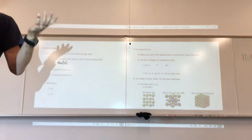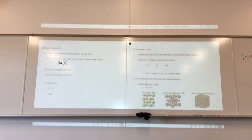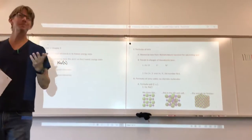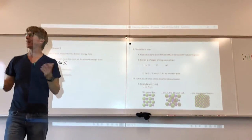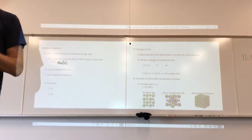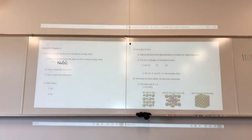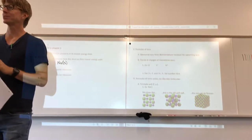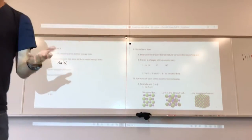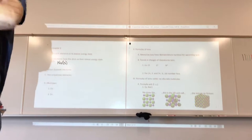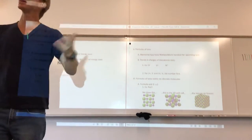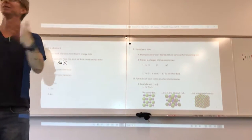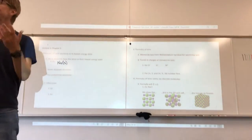Red elements are gases at lowest energy state at room temperature and pressure. Blue means liquid. Outlined or ghosted elements are unstable — all of the isotopes of those elements are radioactive. Another way of looking at it is those elements are not naturally occurring on Earth, because any of them that existed have radioactively decayed away.